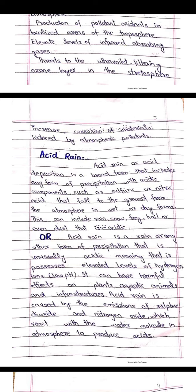Now we discuss acid rain. Acid rain, or acid deposition, is a broad term that includes any form of precipitation with acidic components such as sulfuric acid or nitric acid that fall to the ground from the atmosphere in wet or dry form. This can include rain, snow, fog, hail, or even dust that is acidic.